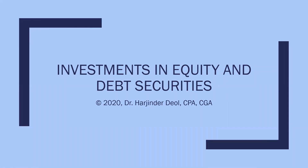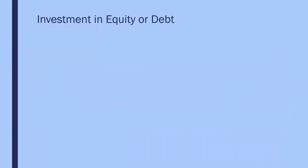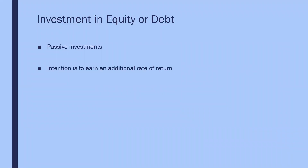Hello and welcome to Topic 3 of Advanced Financial Accounting. This topic will cover investment in equity and debt securities. When we are talking about these investments, we are essentially referring to passive investments, where the intention of making the investment is to earn an additional rate of return. If so, IFRS 9 will apply to the accounting of such investments.